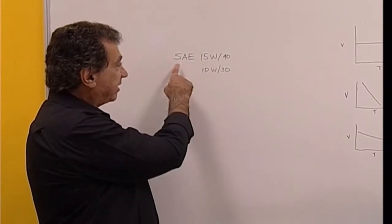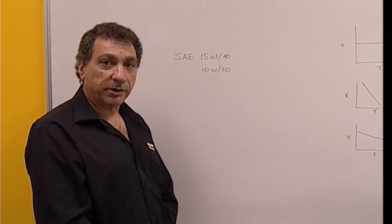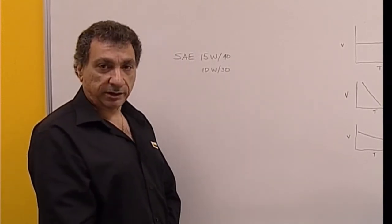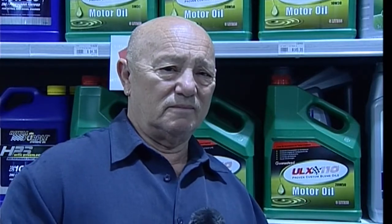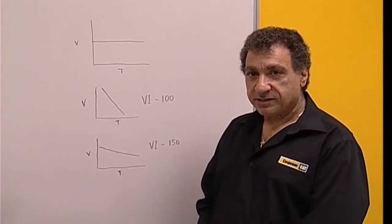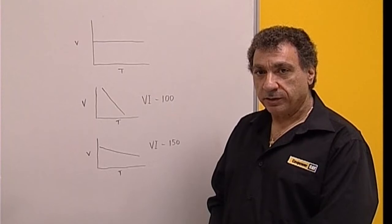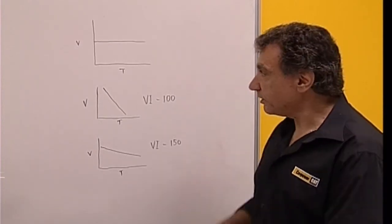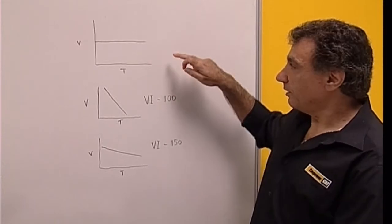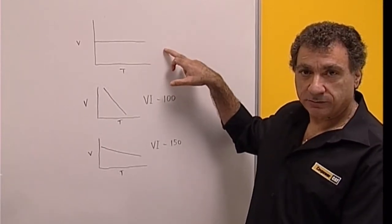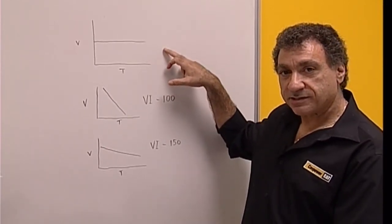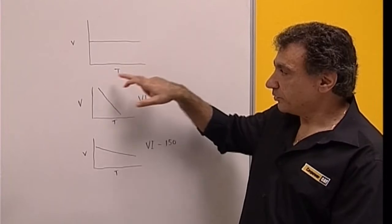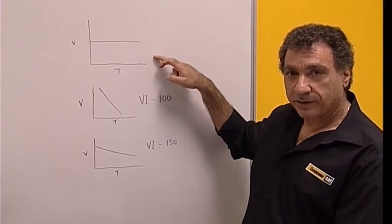And basically the SAE is Society of Automotive Engineers who came up with this grading system. Here's another one Tasso, viscosity index, what does that mean? Okay, viscosity index tells us how the oil viscosity changes with temperature. So typically what we would like to see is a flat line that tells us that no matter what the temperature is, the viscosity stays the same.